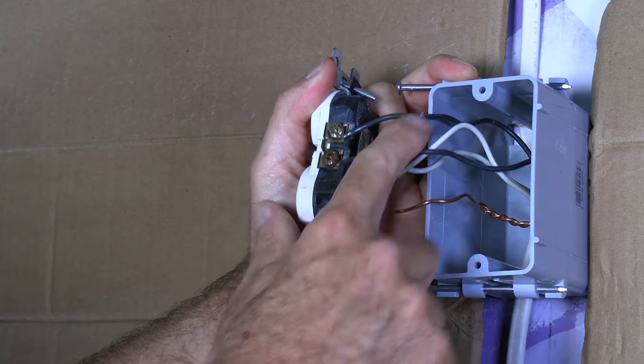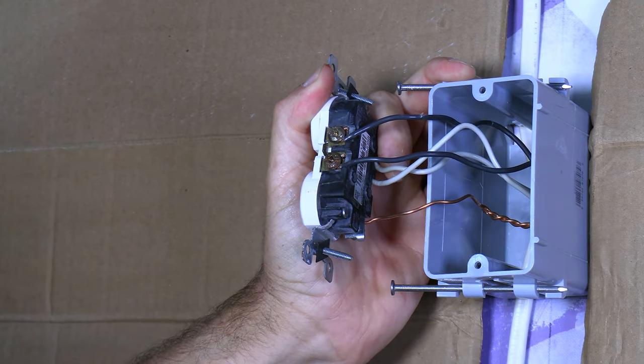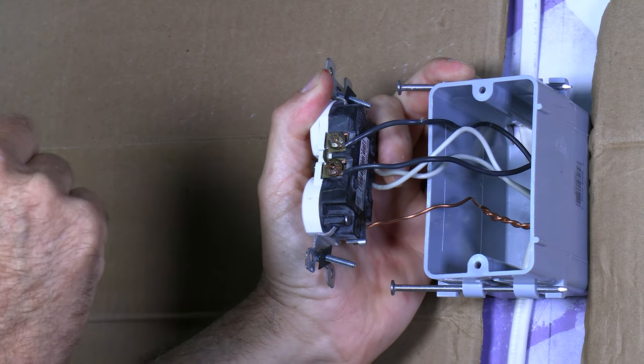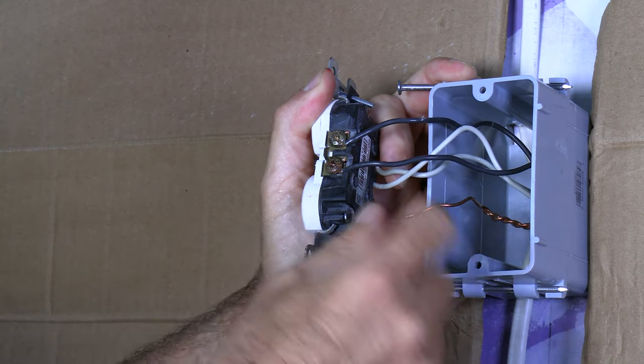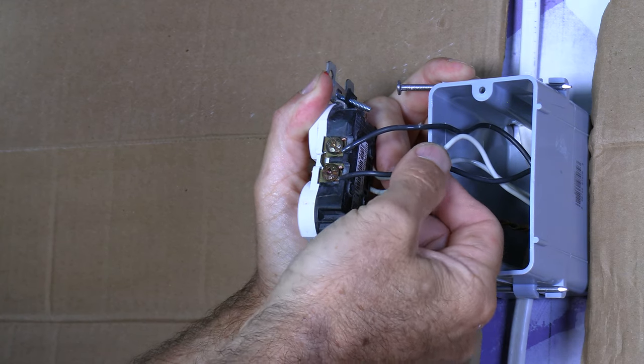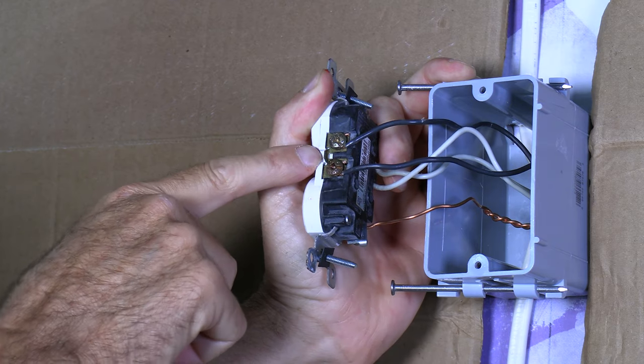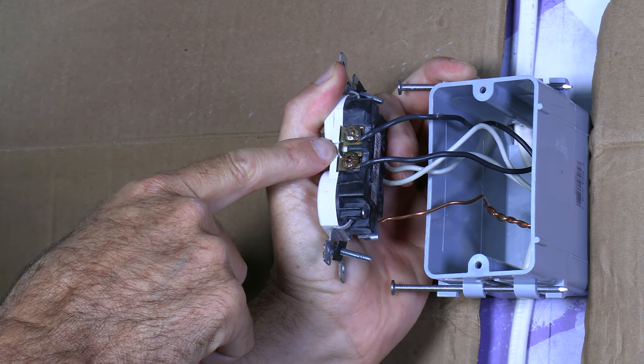All right. Got all four of my wires hooked back up. Now, if your plug happens to be at the end of a run, the plugs are usually daisy chained together like Christmas tree lights. You're only going to have one set of wires to worry about and you can put those wires on either set of screws. It really doesn't make any difference because they're bonded together right here, as I told you before.